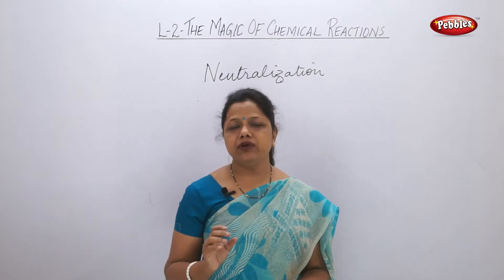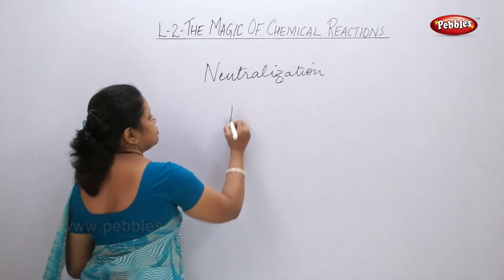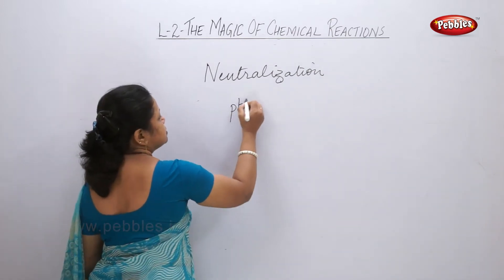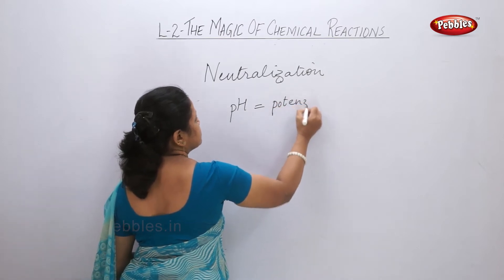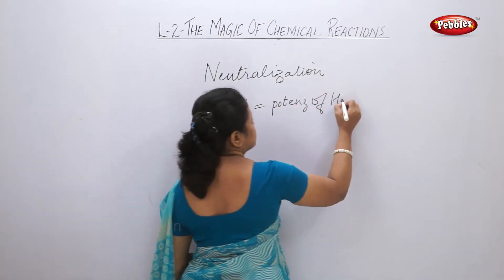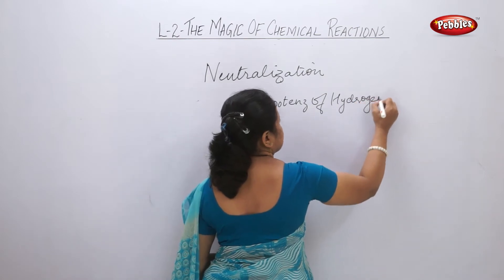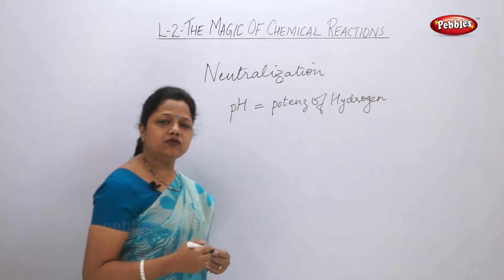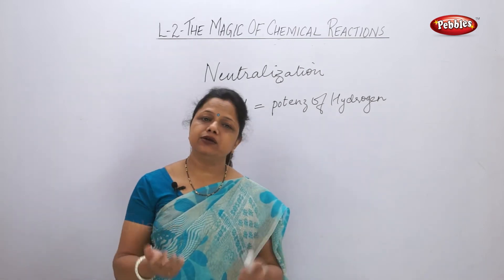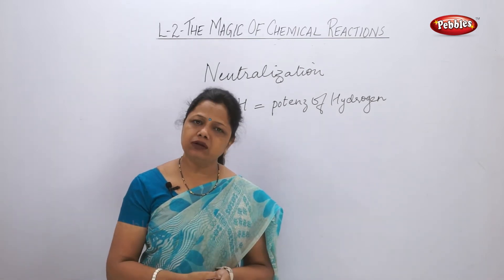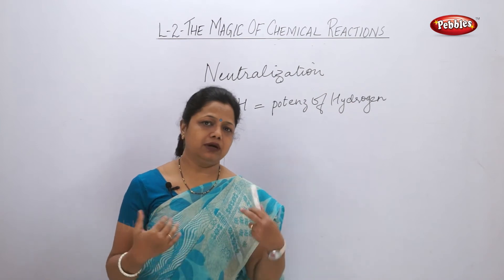Here we are trying to see what pH means — what does pH stand for? It is called the potence of hydrogen. Potence of hydrogen means how much amount of hydrogen is present. Depending on that, the pH value can be understood.